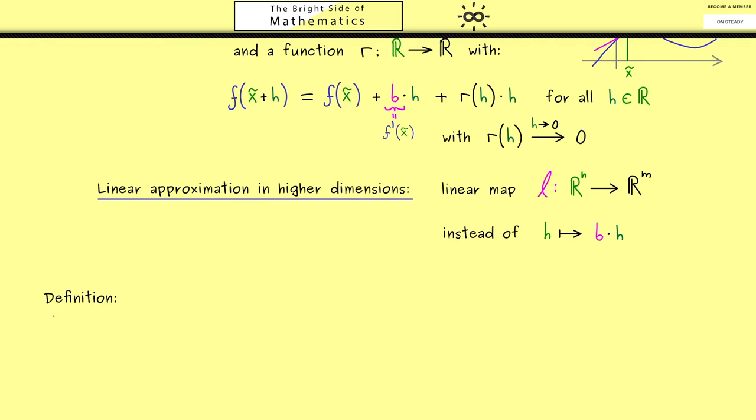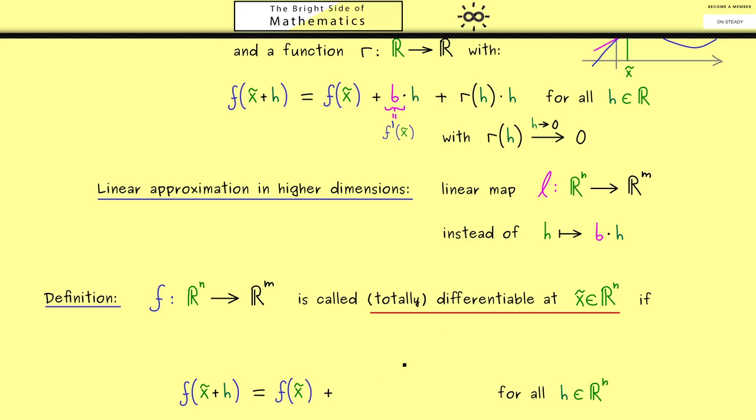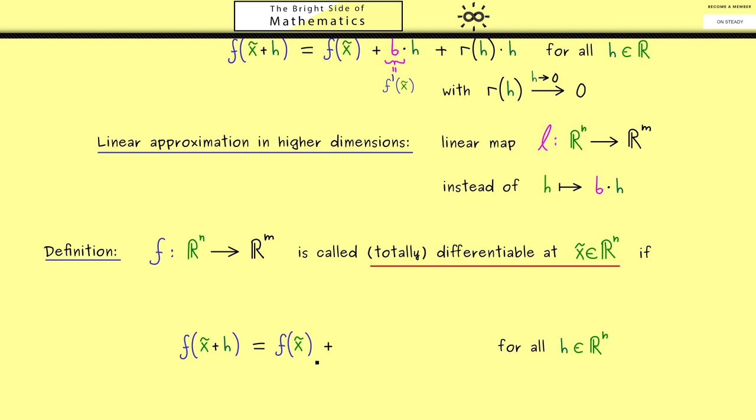Ok, then I would say let's put all of this into a formal definition. So we consider the general case of a function from R^n into R^m. This means that we have exactly n variables and the values of the function are given by vectors with m components. Now the term we want to define is differentiable as we have it in one dimension but to make it clear we often talk of totally differentiable. And as you know this is a property that is defined pointwise. So the function is called totally differentiable at a given point of the input space. And now we already know what we need for this definition namely this equation here in the generalized form. So we write f of x tilde plus h is equal to f of x tilde plus a linear map l, l of h plus a rest term which should be small for small h.